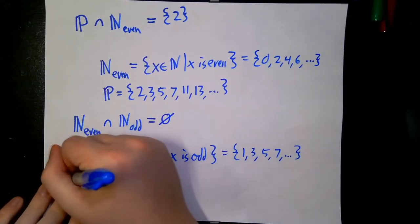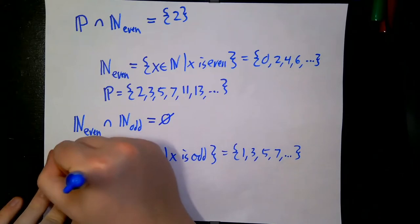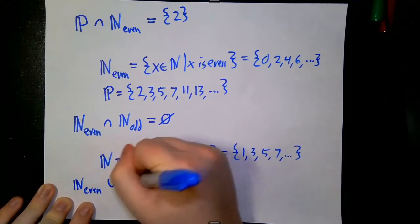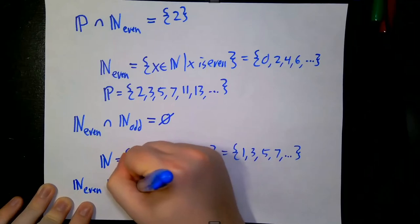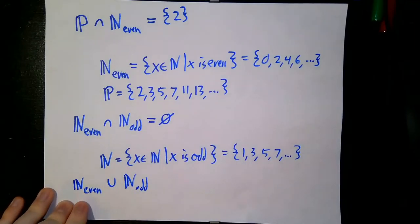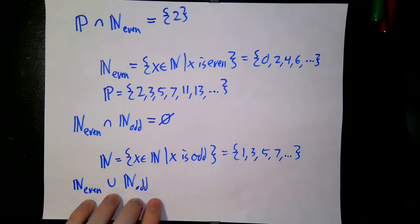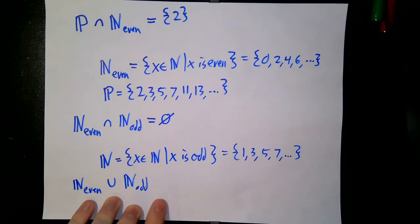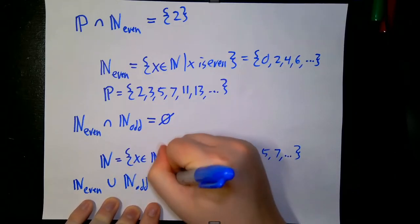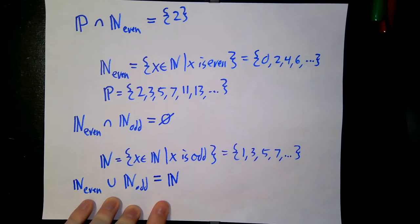If instead we look at N_even ∪ N_odd, this is all natural numbers that are even or odd. Since all numbers are either even or odd — no numbers are both, and no numbers are neither — this union is simply the entirety of the natural numbers.